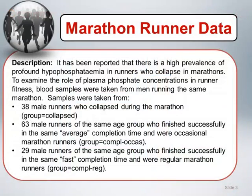We will use the marathon runner data to illustrate both tests. It has been reported that there is a high prevalence of profound hypophosphatemia in runners who collapse in marathons. To examine the role of plasma phosphate concentrations in runner fitness, blood samples were taken from men running the same marathon. Samples were taken from 38 male runners who collapsed during the marathon — this group is referred to as the collapse group — and 63 male runners of the same age group who finished successfully in the same average completion time and were occasional marathon runners, referred to as the completed occasional runner group, denoted COMPL-OCCAS.